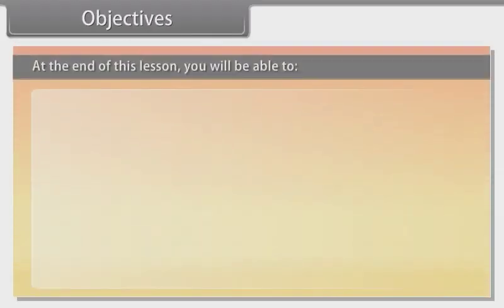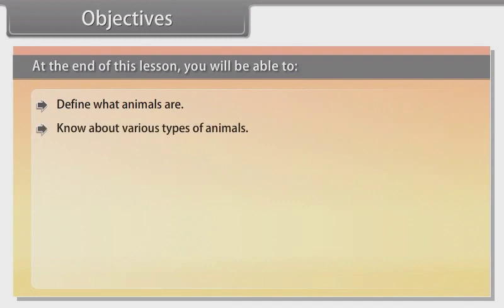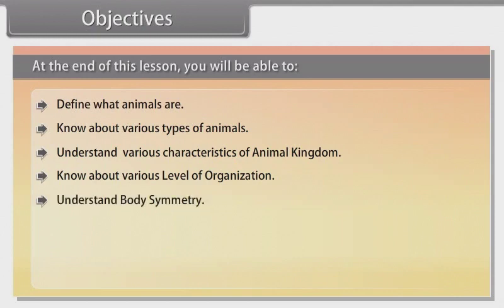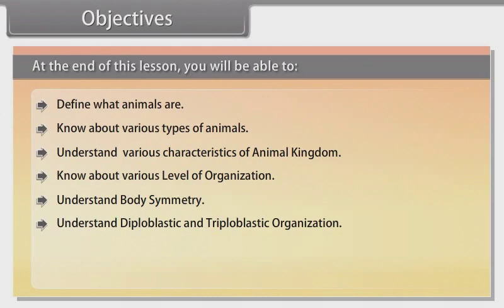Objectives: At the end of this lesson, you will be able to define what animals are, know about various types of animals, understand various characteristics of the animal kingdom, know about various levels of organization, understand body symmetry, understand diploblastic and triploblastic organization, and know about the coelom.